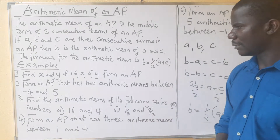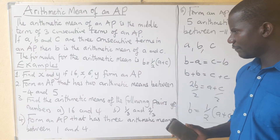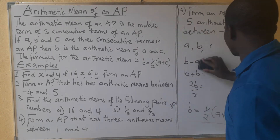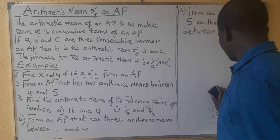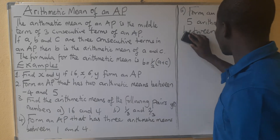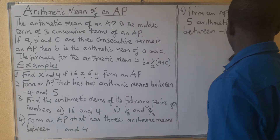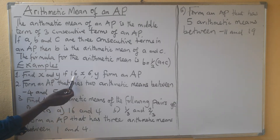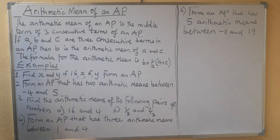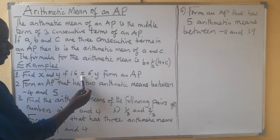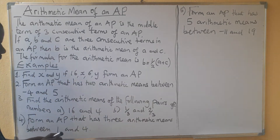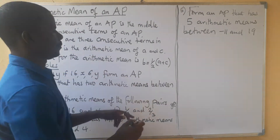Let us look at the first question. We want to find X and Y if 16, X, 6, Y form an AP. So to find X, notice that X is in the middle of 16 and 6, so we use the arithmetic mean formula where B equals ½(A + C).